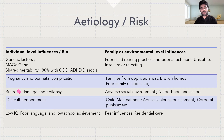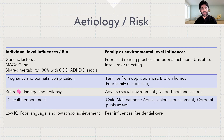Family or environmental level influences include poor child-rearing practice, poor attachment such as unstable, insecure, or rejecting bonding with parents, families from deprived areas, broken homes, poor family relationships, adverse social environment, adverse neighborhood and school, and child maltreatment including abuse, violence, and corporal punishment. Residential care also increases the risk. Individual and family or environmental risk factors interact with each other to develop Conduct Disorder.